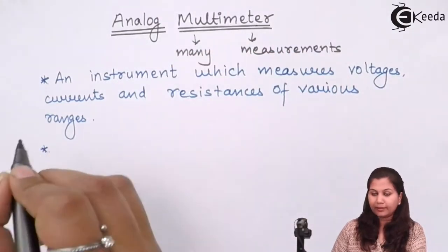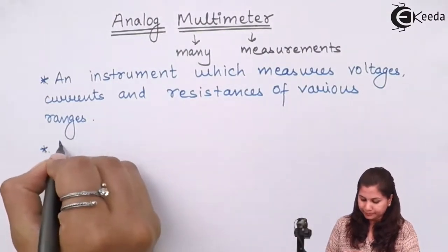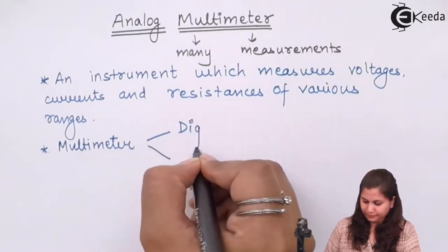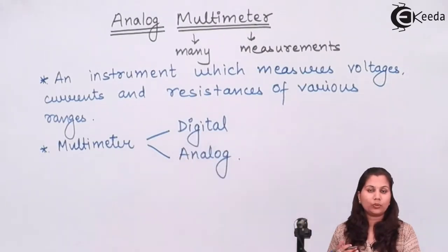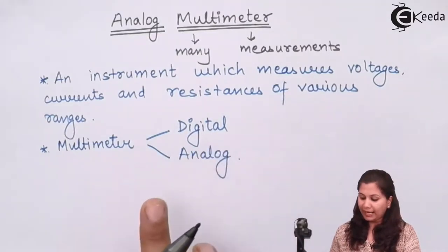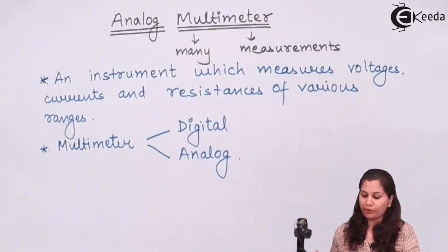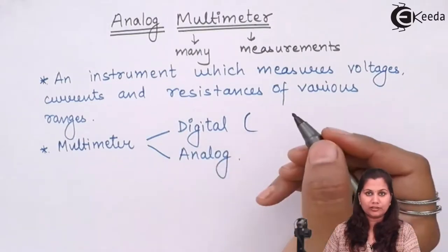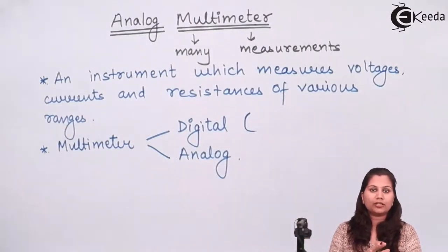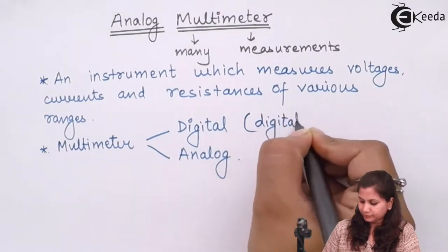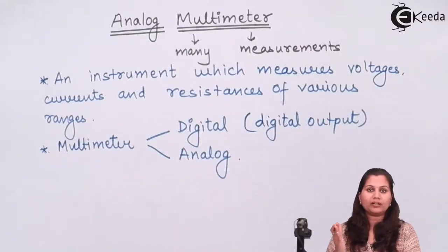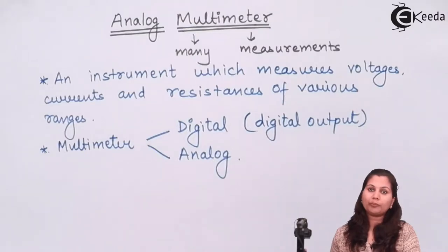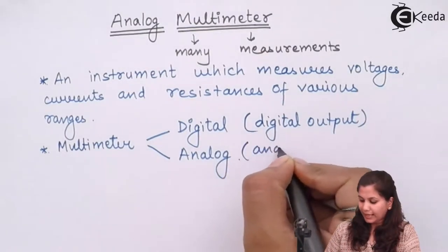Multimeters are of two types: digital multimeter and analog multimeter. The difference between these two is that the digital multimeter gives output in digital form — a digital reading displayed over an LED or LCD — whereas the analog multimeter gives output in analog form, where a pointer moves over a scale with divisions, and by reading that scale we can get the output of the instrument.